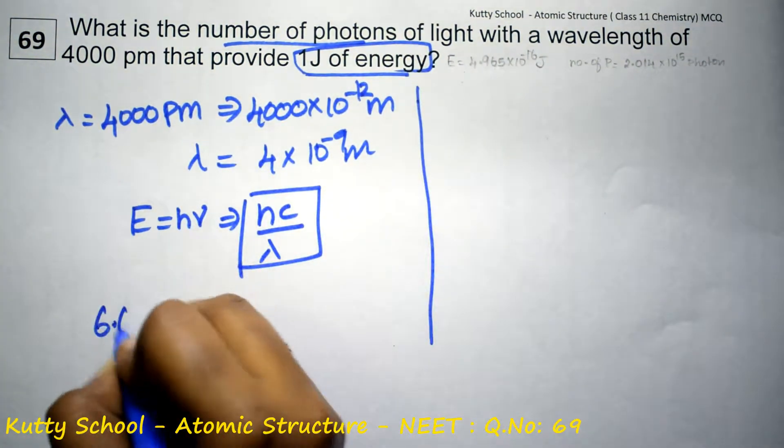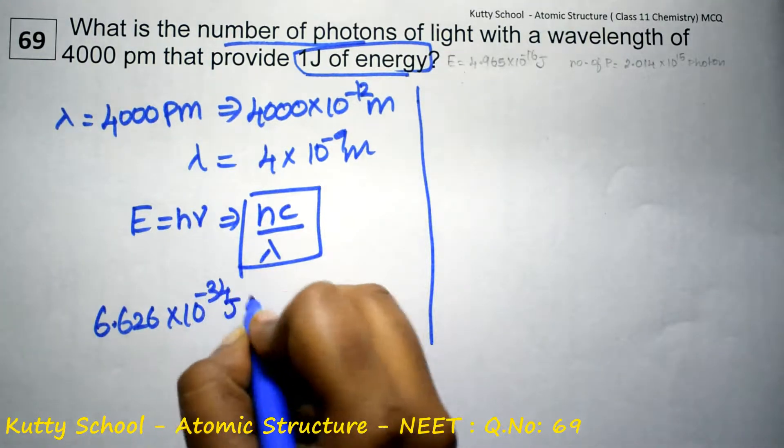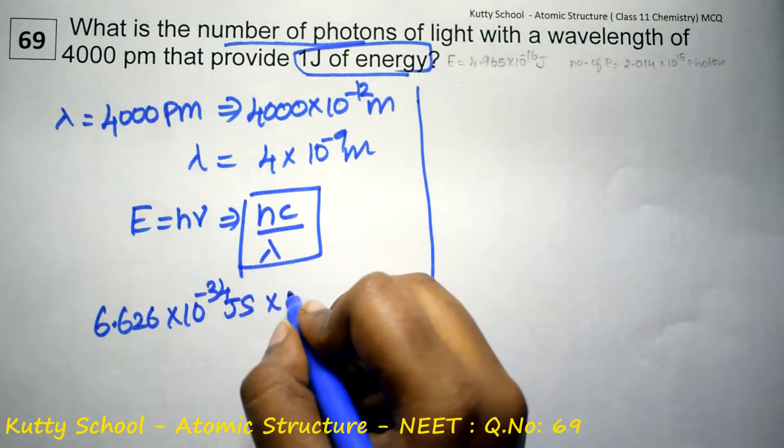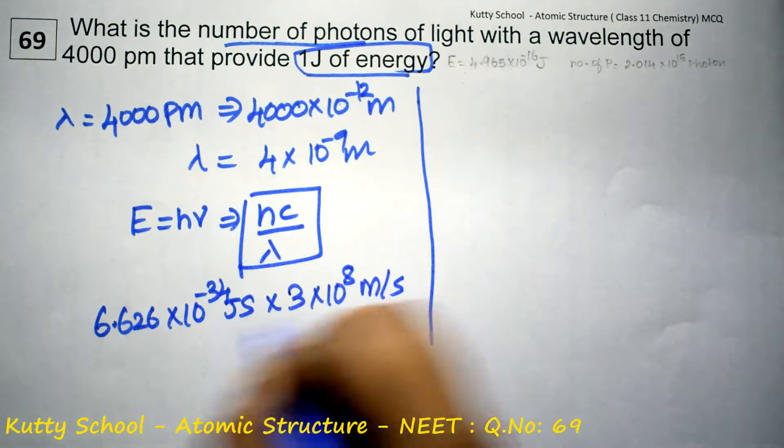Planck's constant 6.626 into 10 power minus 34 joule second into c, 3 into 10 power 8 meter per second, by lambda.